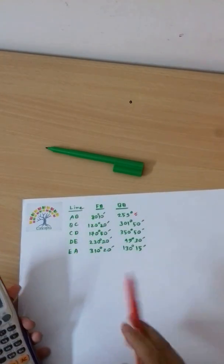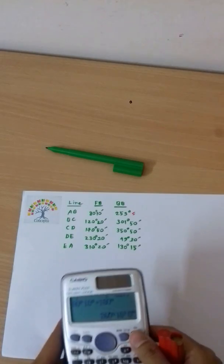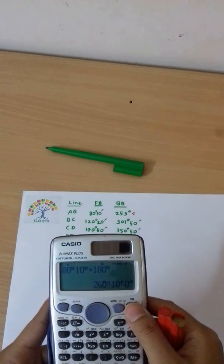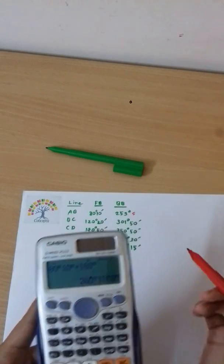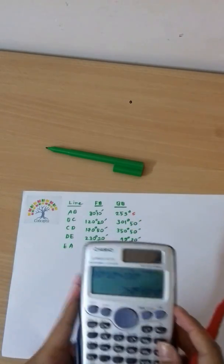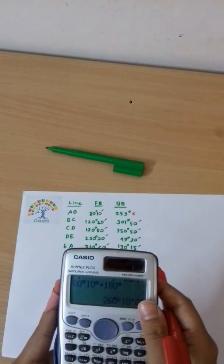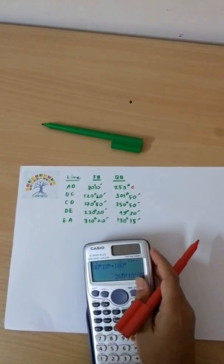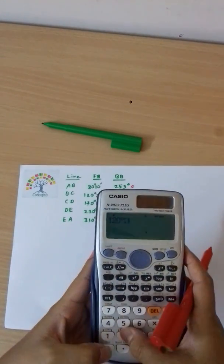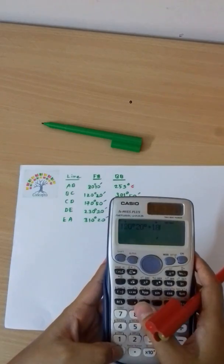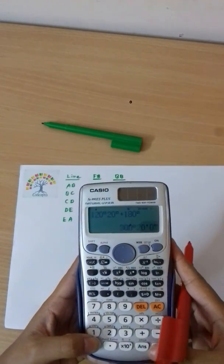Starting with the station bearings: Station A to B has a bearing of 80 degrees 10 minutes. Station B to C measures 120 degrees 20 minutes. Station C to D is at 259 degrees, and the back bearing from station B shows local attraction affecting our measurements.